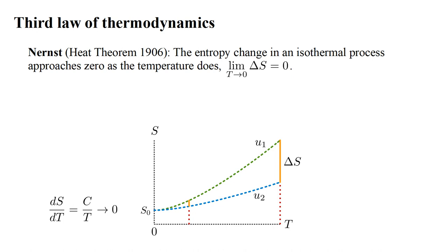Moreover, the slope of the S-versus-T curve, dS-dt, is equal to heat capacity over temperature. According to the Einstein and Debye models, this goes to zero as the temperature does. So the two curves not only converge to the same value, they converge to the same zero slope.